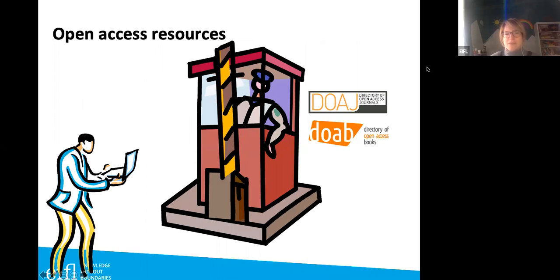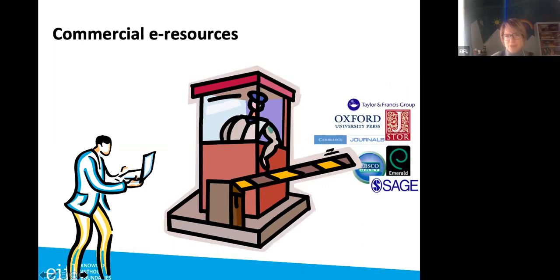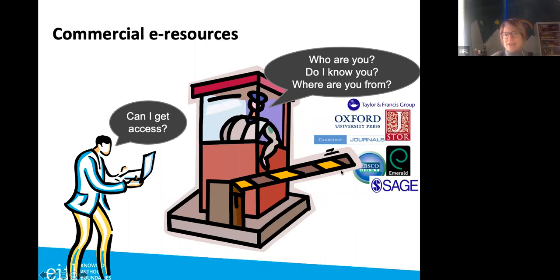To illustrate this: for open access resources, if you ask 'can I get access?' the answer is 'sure, everybody's welcome, come on in.' For commercial resources, the barrier is down and you have to answer questions: who are you, do I know you, where are you from? If you're registered — for example via IP access — you're then able to access the resource.